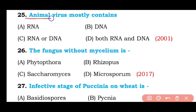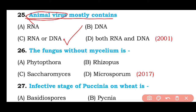Question number twenty-five: Animal viruses mostly contain RNA, DNA, RNA and rDNA, or both RNA and DNA? The correct answer is option C — animal viruses mostly contain RNA; they have only a single type of nucleic acid.